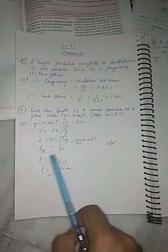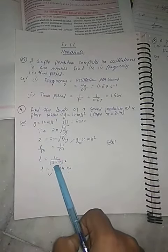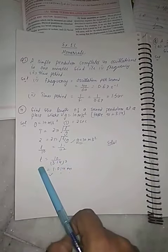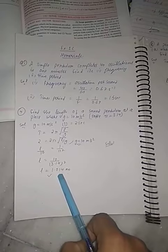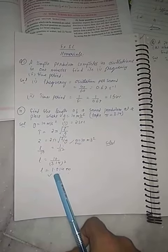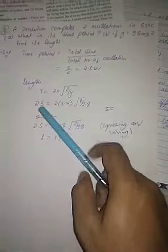to calculate l. L equals 10 upon 3.14 squared. When you do the solution, you are able to calculate the length of the second pendulum, that is 1.014 meters. Next is solution number six.